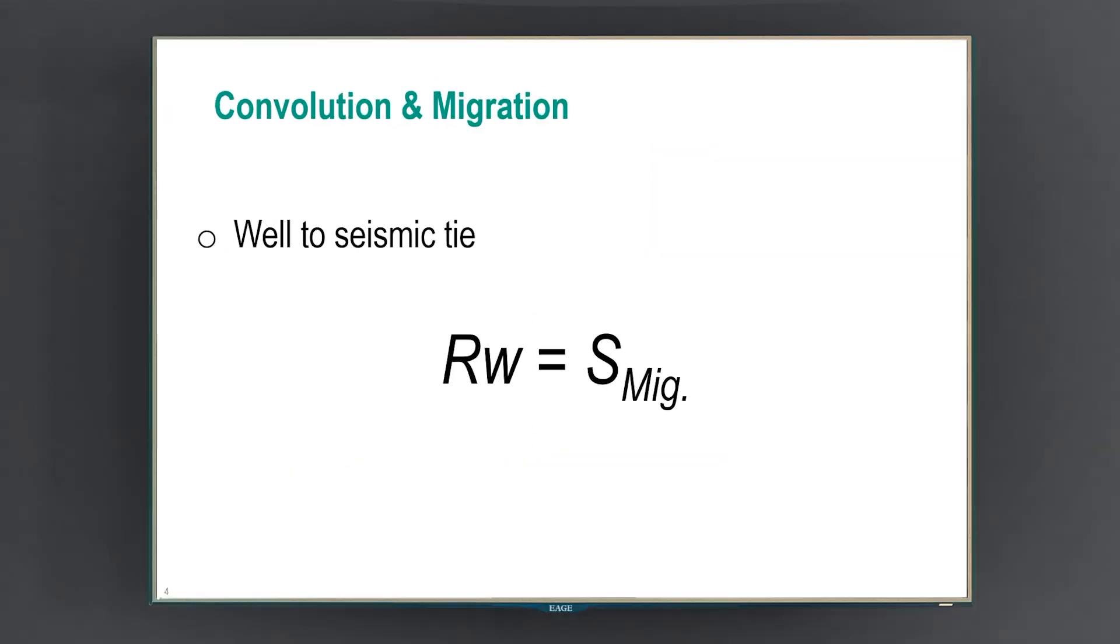The first application is well to seismic tie. This is when we try to estimate a wavelet which we use for seismic inversion. But also we try to match the seismic and well data by accounting for some of the shift, time shift or phase mismatches. Everything is formulated here. Capital R is explaining the convolution in a matrix format, and on the right hand side, we have the seismic image.